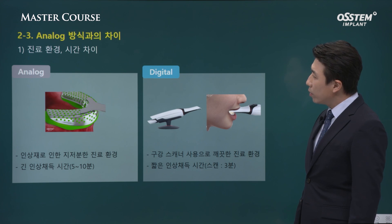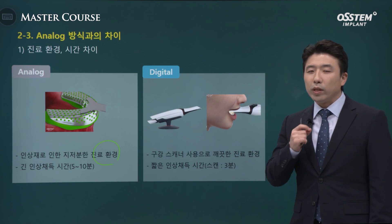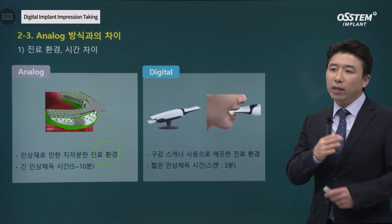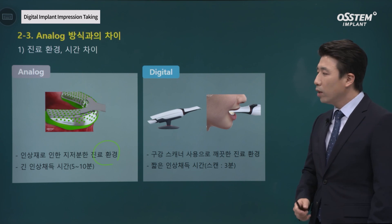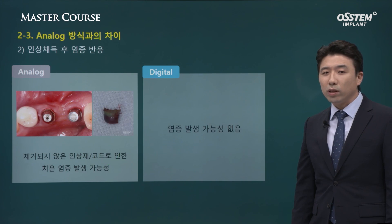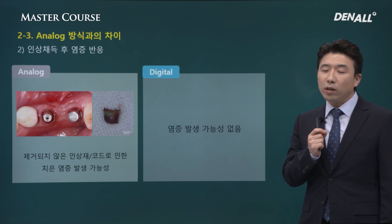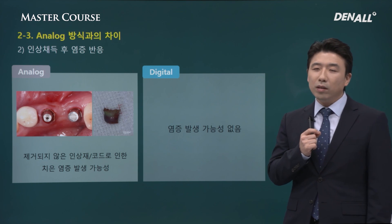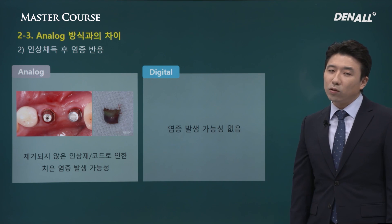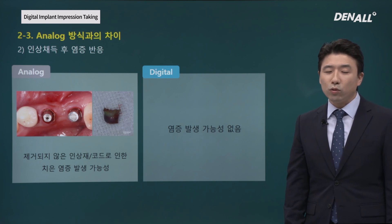Another advantage compared to analog is environmental cleanliness. When we take traditional impressions and pour gypsum models, materials are used and the environment can become cluttered. Using a scanner, everything can be performed in a clean way. Additionally, impression materials come in contact with the gum and oral cavity, causing inflammation, and residual material in the mouth can cause further inflammation. The digital method is free from that, so it eliminates the risk of inflammation.